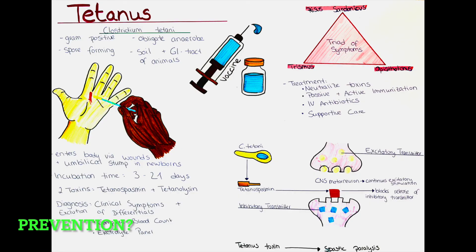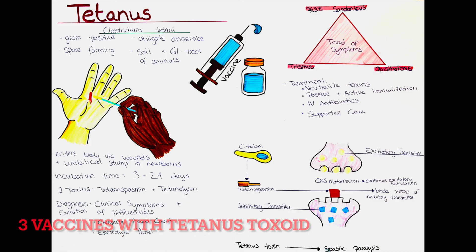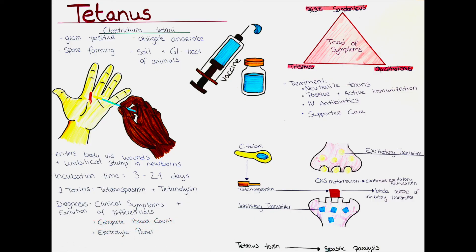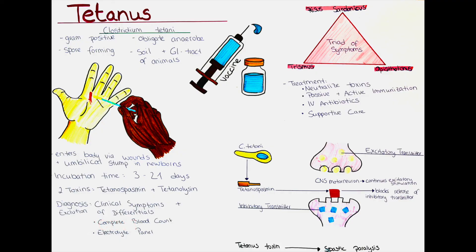How can we prevent tetanus? Prevention is primarily achieved through vaccination with the tetanus toxoid. The first administration of the vaccine is typically in the first year of a child's life and consists of three vaccines, often in combination with vaccines for diphtheria and pertussis. Booster vaccinations are recommended every 10 years, also for adults. Proper wound care is also crucial — any wound, but especially those contaminated with dirt or soil, should be rinsed with water and adequately disinfected immediately.